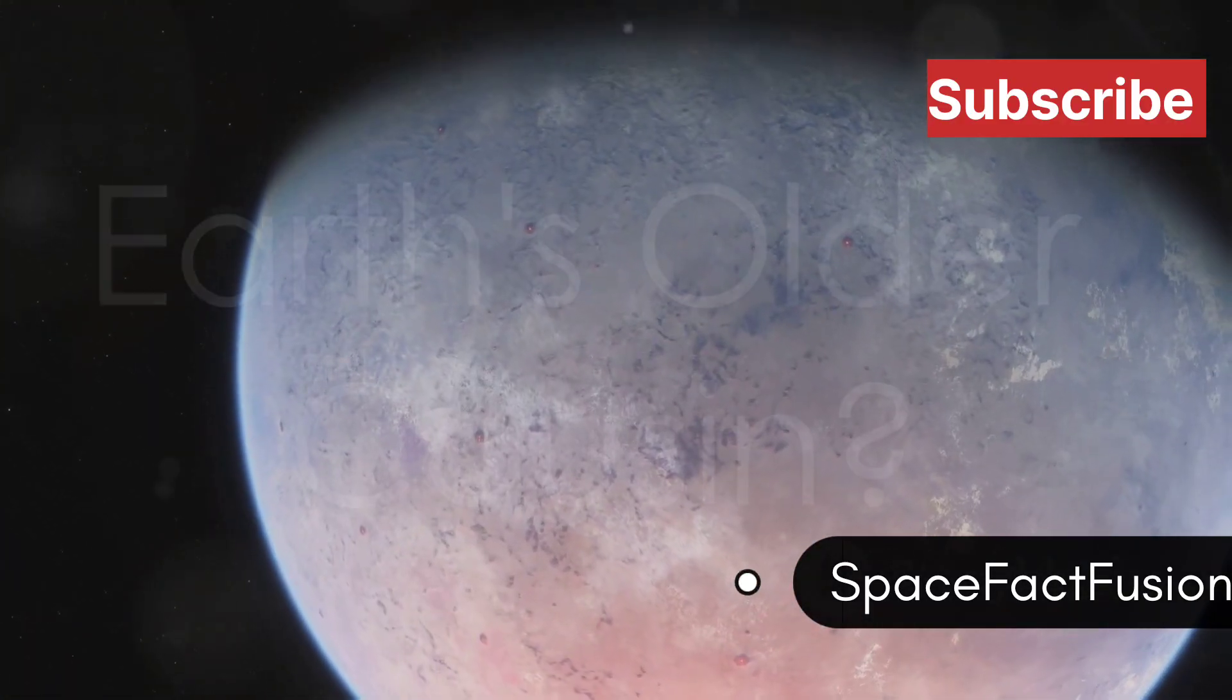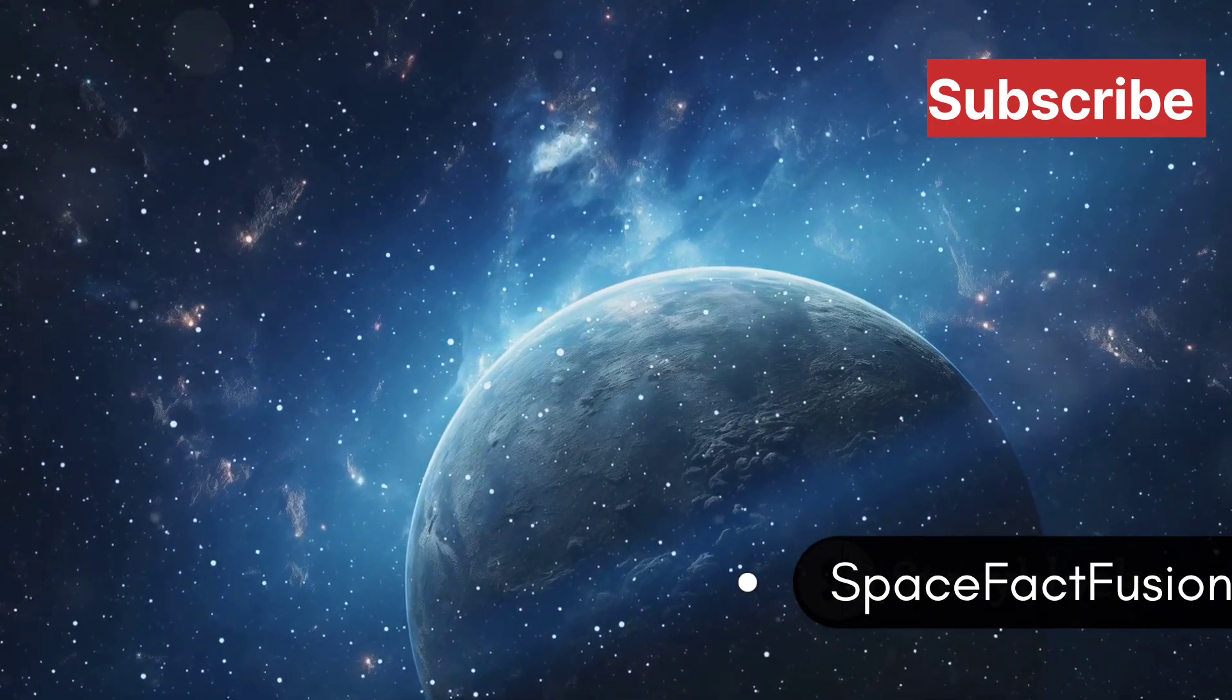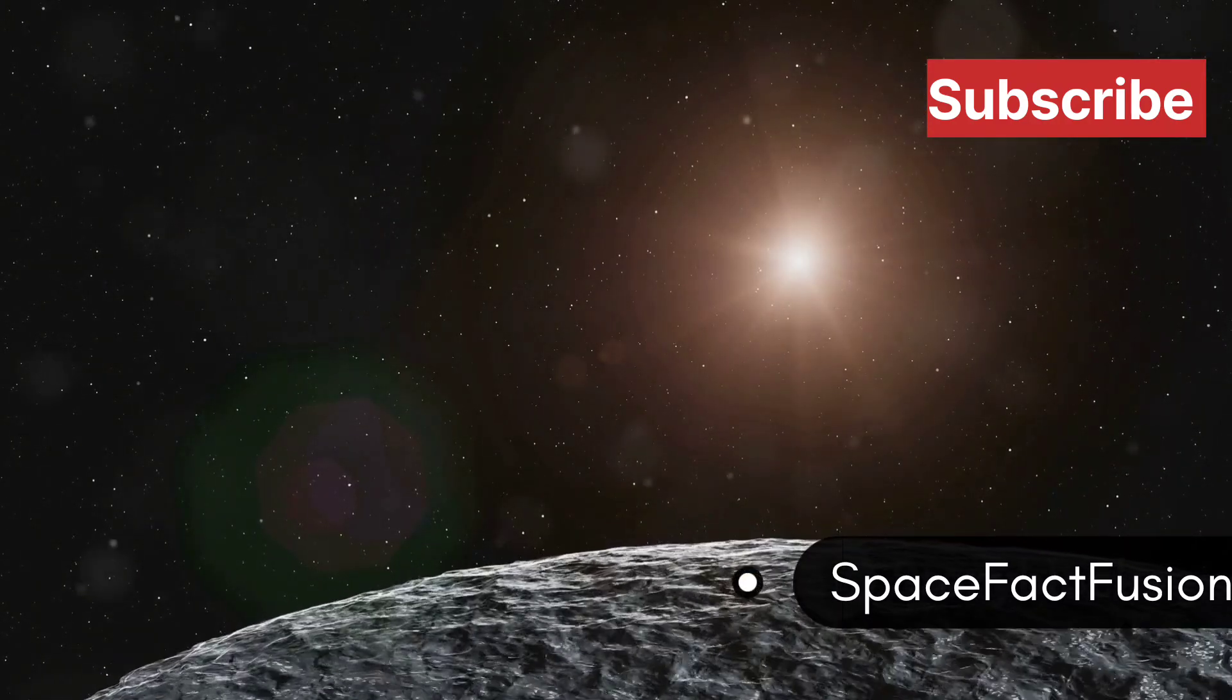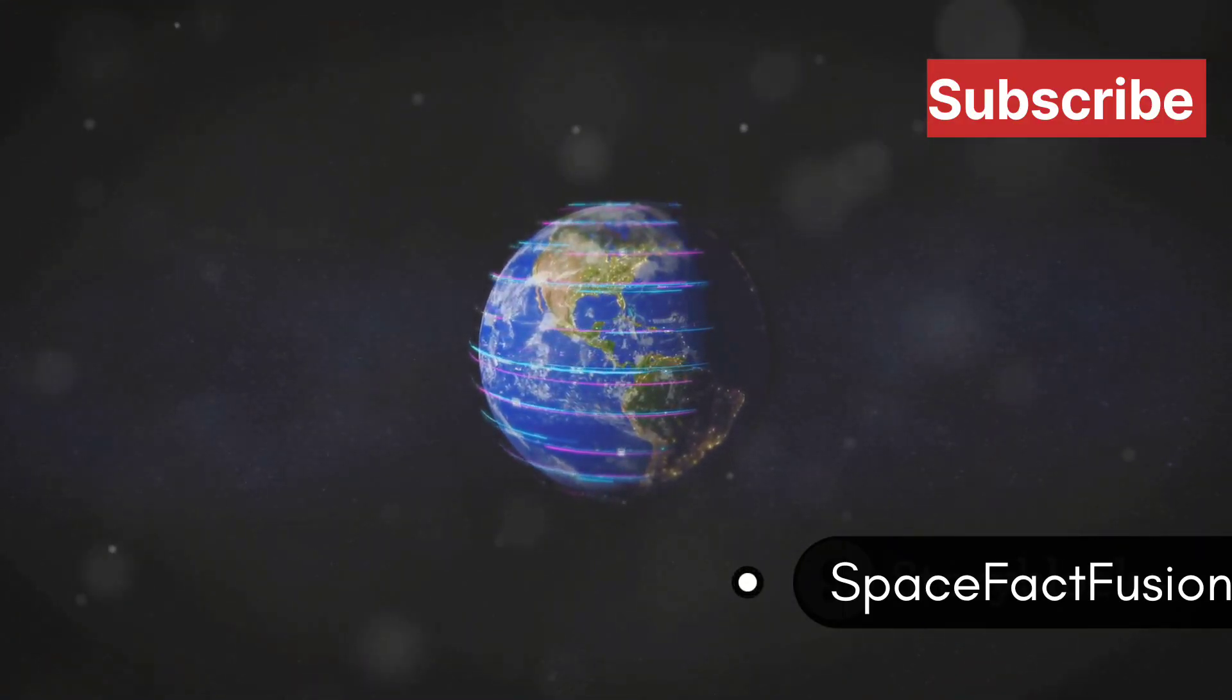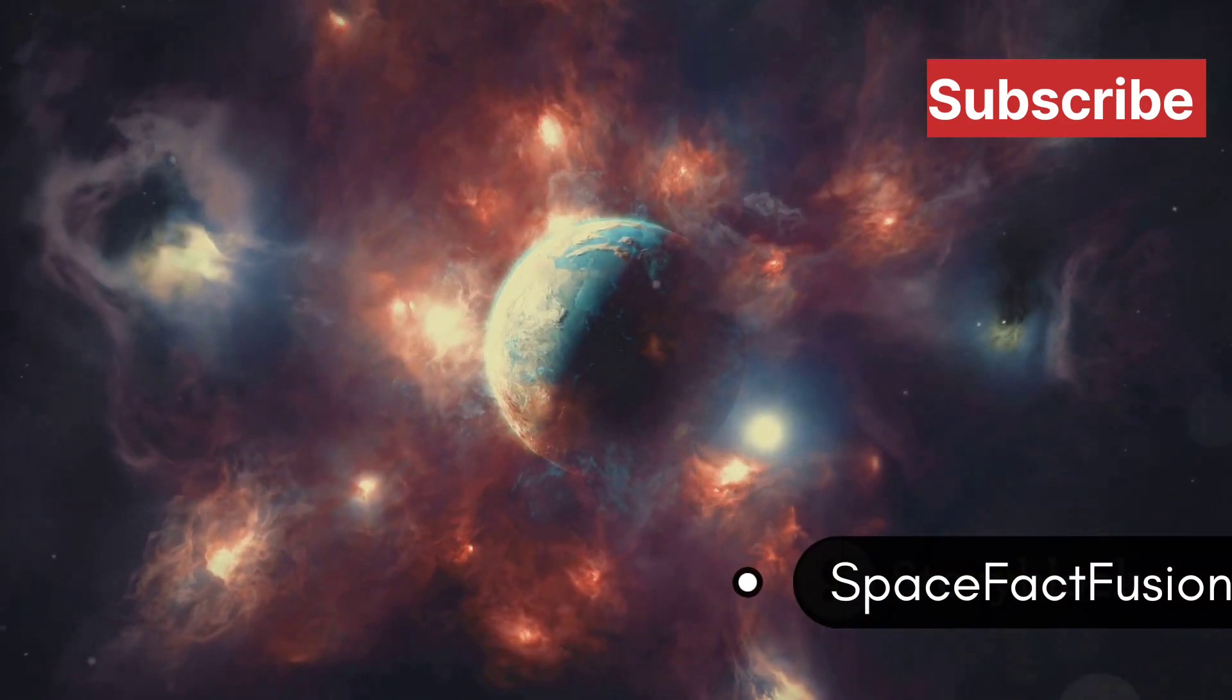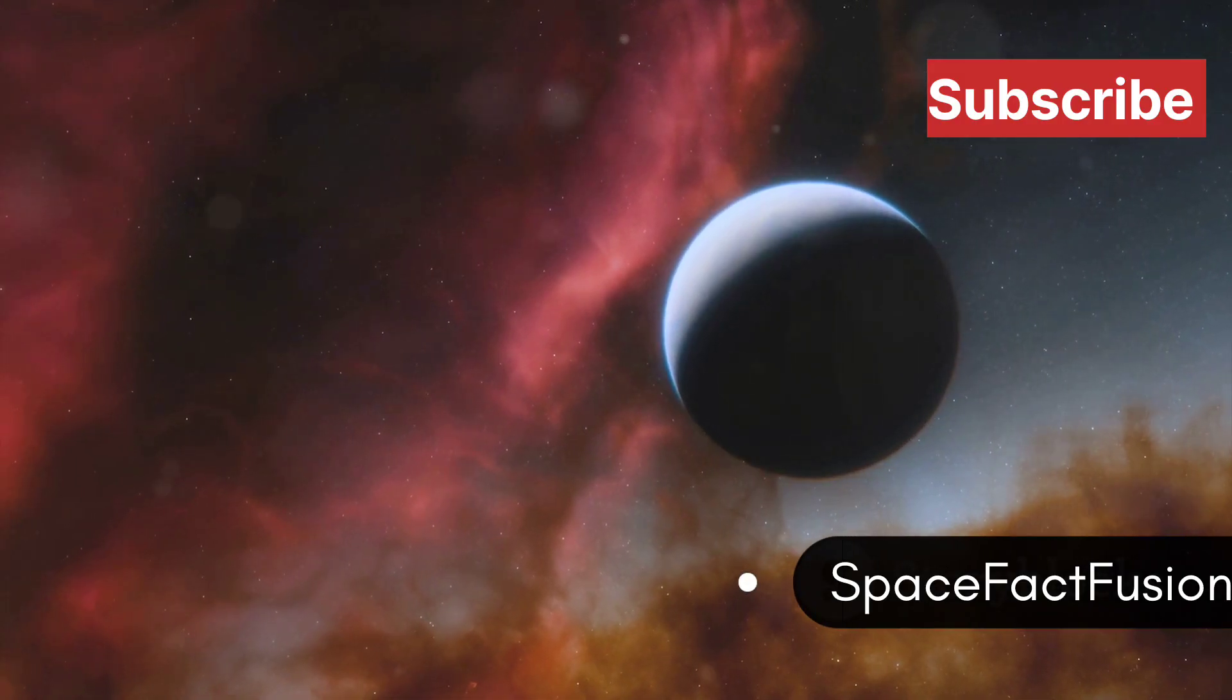Our first stop takes us to Kepler-452b, a planet often dubbed Earth's cousin. This planet orbits a star similar to our sun in the habitable zone where liquid water could exist. Kepler-452b is older and larger than Earth, like a cool older cousin with interesting stories. It's been around for about six billion years, giving life plenty of time to develop. Imagine alien civilizations gazing at their night sky wondering if they have a cosmic cousin.